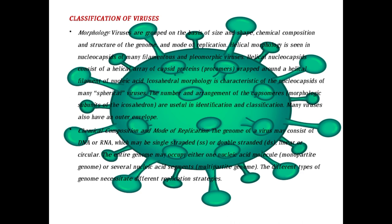Classification of viruses is based on size, shape, chemical composition and structure, genome, and mode of replication. Morphologies include helical morphology seen in nucleocapsids of many filamentous viruses. Regarding chemical composition and genome replication: a virus genome may consist of DNA or RNA, single-stranded or double-stranded, linear or circular, and the genome may occupy either single or multiple nucleic acid segments. Different types of genomes necessitate different replication strategies.